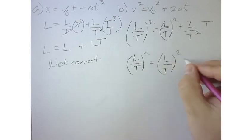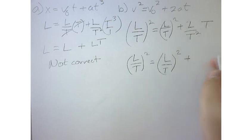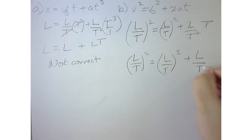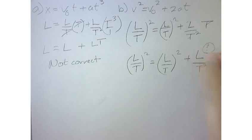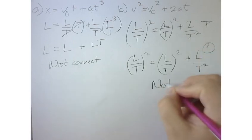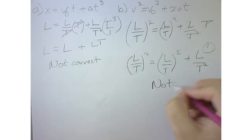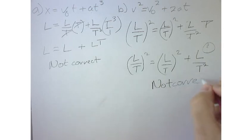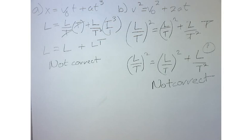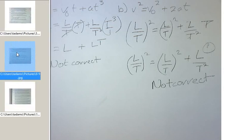And then over here, this t cancels with this, giving L over t squared. Is that the same? No — not correct. So a isn't dimensionally correct, b isn't dimensionally correct. Do you guys want to try c and d? All right, let's see — you guys are curious now.